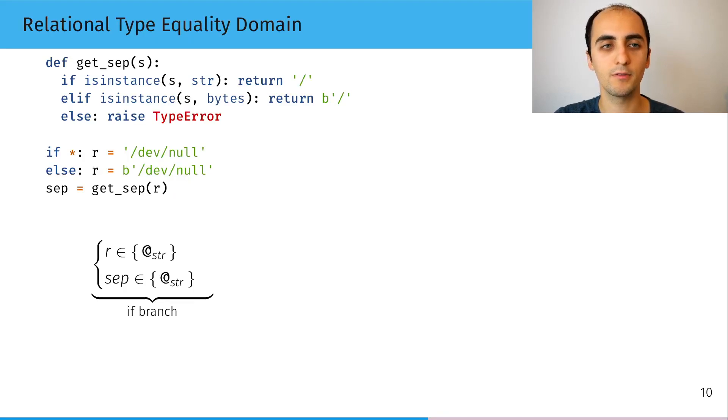So let's get back to this notion of bounded parametric polymorphism or relational domain. In this example, if we merge the results of calling getsep on r,